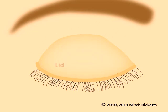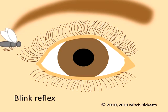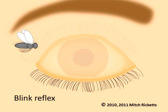The eyelids and lashes help protect the eyes. The blink reflex closes the eyelids when hazards are perceived in the environment. For instance, the blink reflex can be triggered when anything touches the lashes. The blink reflex can also be triggered by sudden movement in front of the eyes.